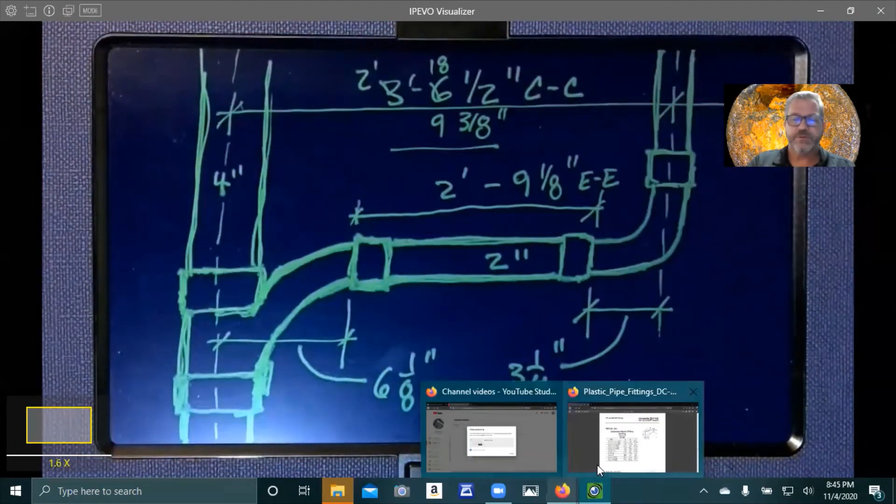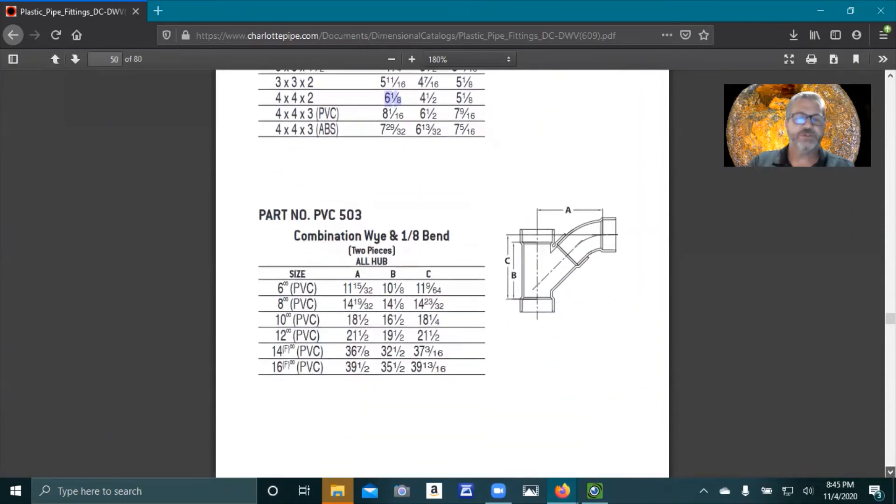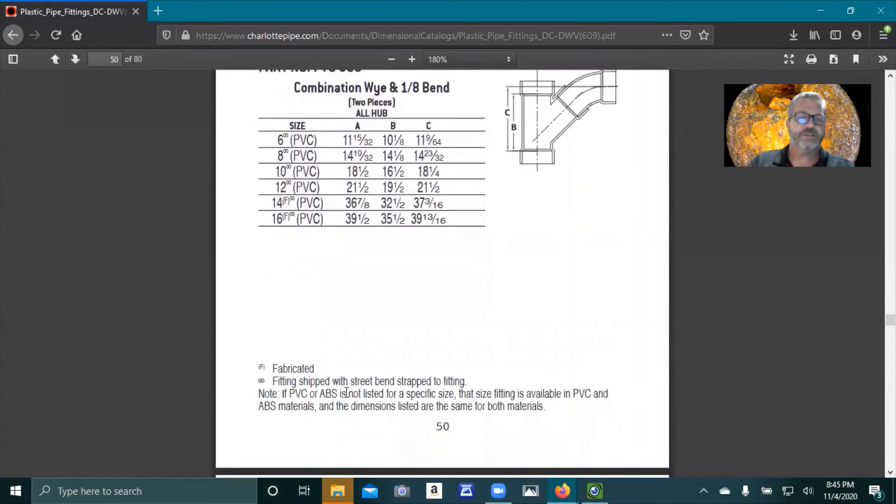Now, let's take a look real quick and show you four by four by two. There's nothing shown here. There's no signifier for PVC or ABS or anything like that. It's blank. So check this out. We scroll down to the bottom of this page and it says, note, if PVC or ABS is not listed for a specific size, that size fitting is available in PVC and ABS materials and the dimensions listed are the same for both materials.